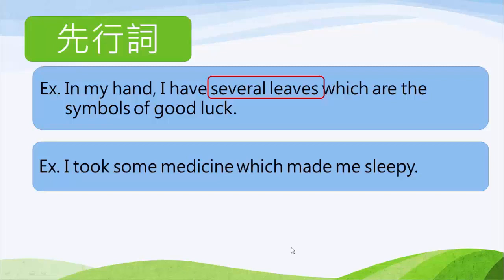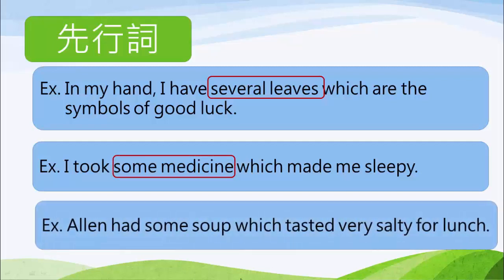第二句：I took some medicine which made me very sleepy. 我吃了一些讓我好想睡覺的藥，which made me very sleepy 是關代子句，因此 some medicine 就是先行詞。第三句：Alan had some soup which tasted very salty for lunch. Alan 喝了一些湯，什麼樣的湯？Tasted very salty——嚐起來好鹹的湯。Which tasted very salty 形容 some soup，因此在這個句子裡面，some soup 就是先行詞。